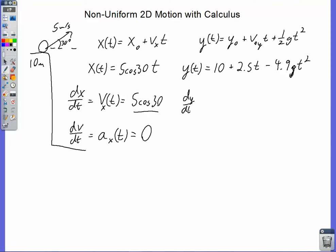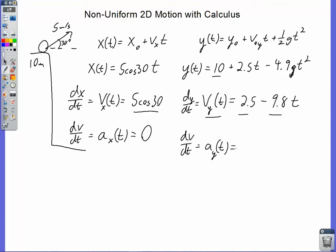On the y side, taking the derivative of y with respect to t gives the y component of velocity at any time t. The derivative of 10 is 0, derivative of 2.5t is 2.5, and derivative of 4.9t squared is 9.8t — giving us 2.5 minus 9.8t. Notice this is another kinematic equation: v final equals v naught minus at. Taking the derivative again gives the acceleration in y: derivative of 2.5 is 0, derivative of negative 9.8t is negative 9.8.